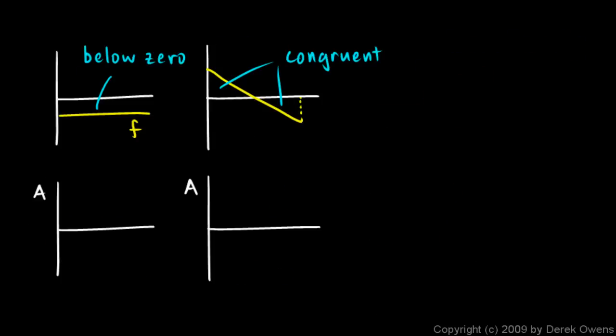And a couple more. In this one, we imagine a little line moving to the right. At first it has swept out no area, but as it moves to the right it sweeps out more and more area. However, this f value is negative, so we consider this negative area. My A is growing — getting bigger and bigger in the negative direction, becoming a number of larger magnitude, but it's negative.